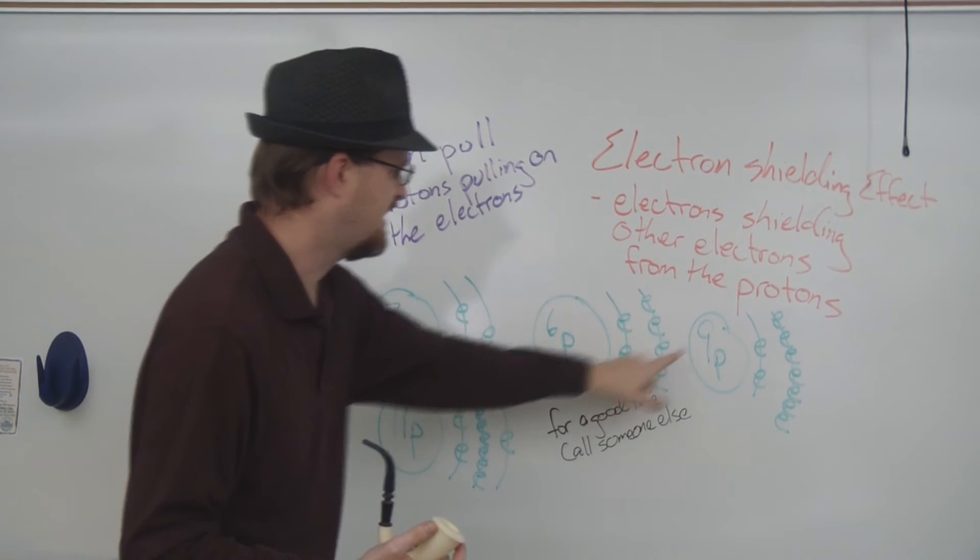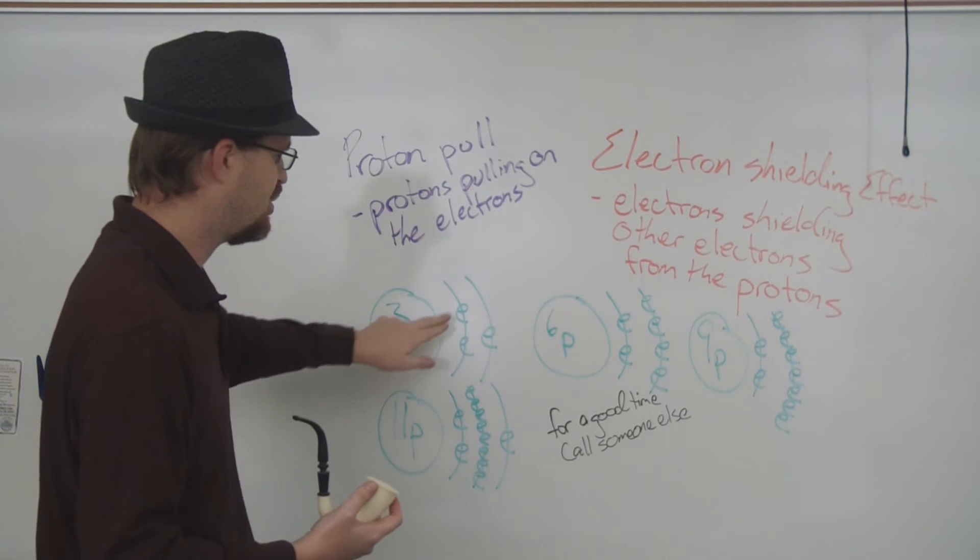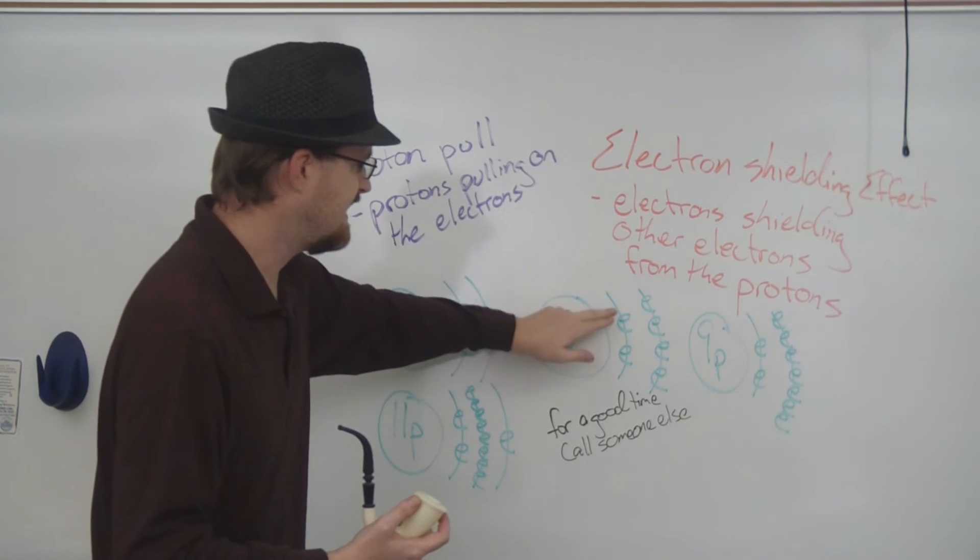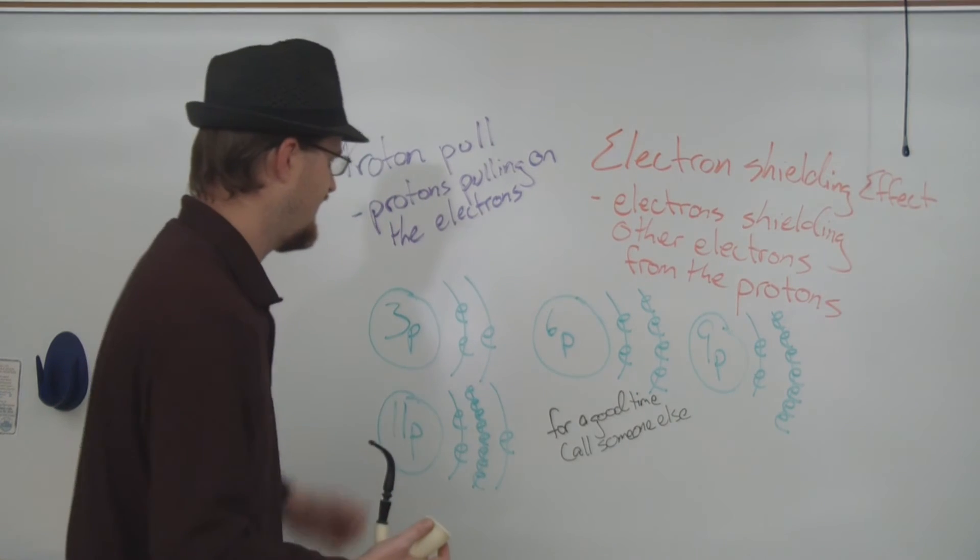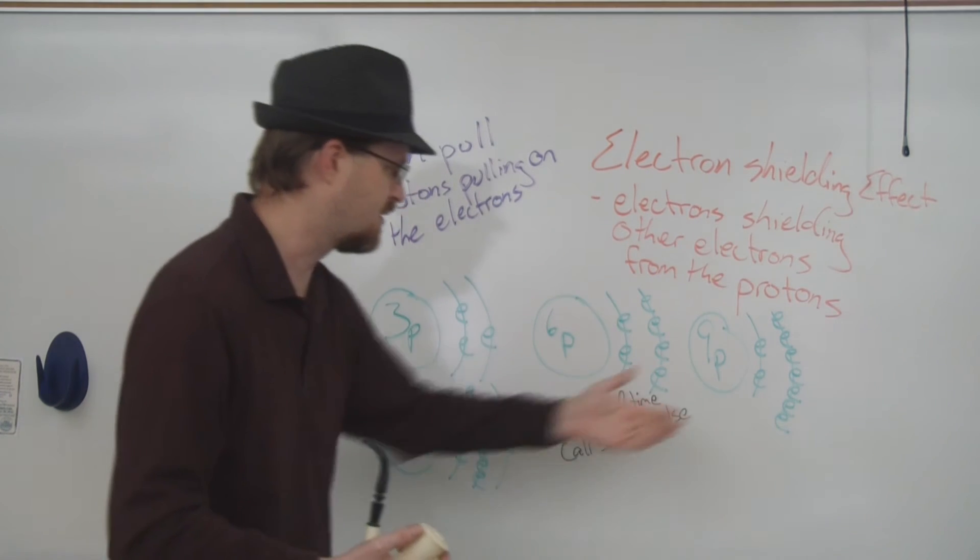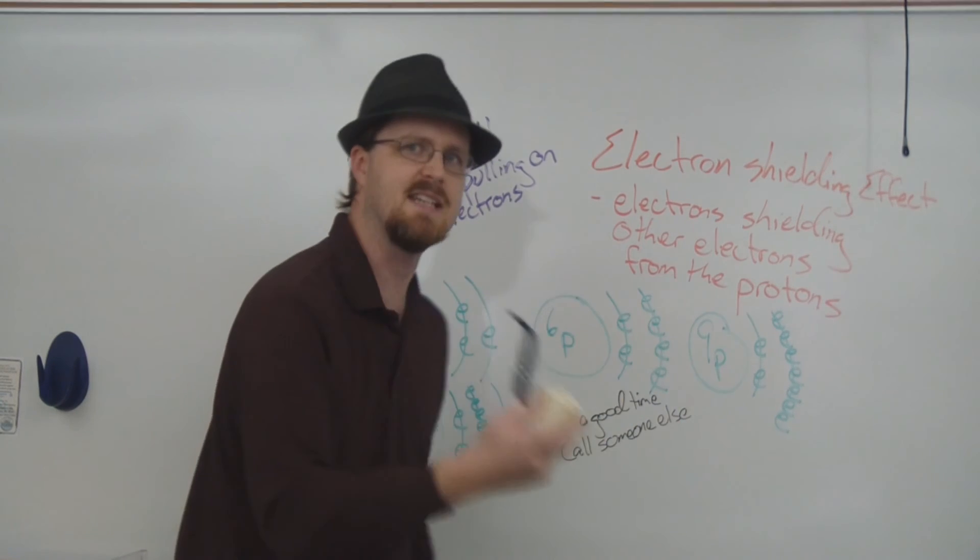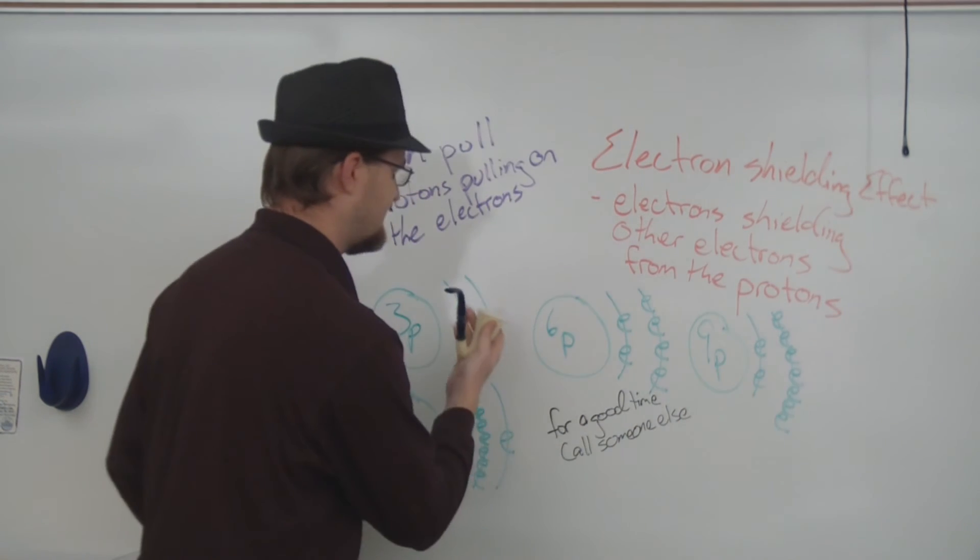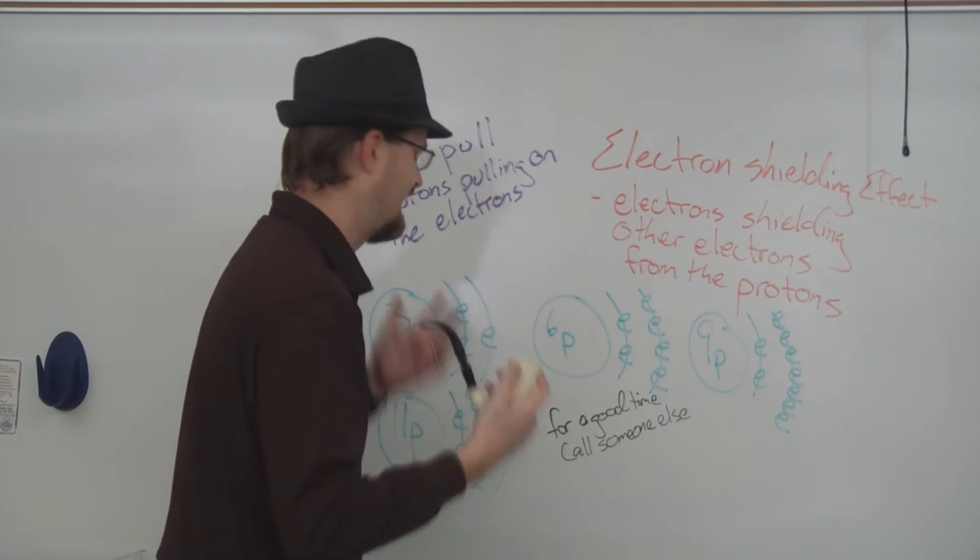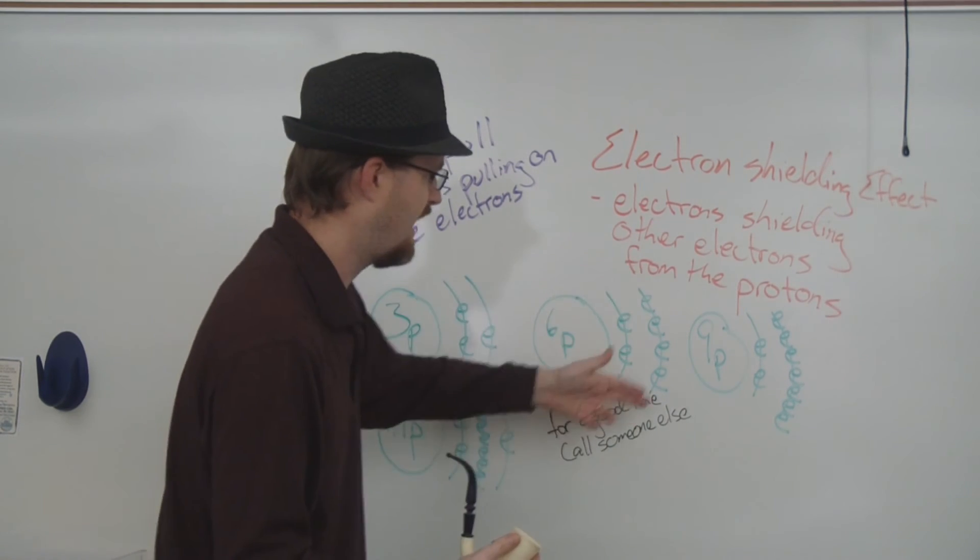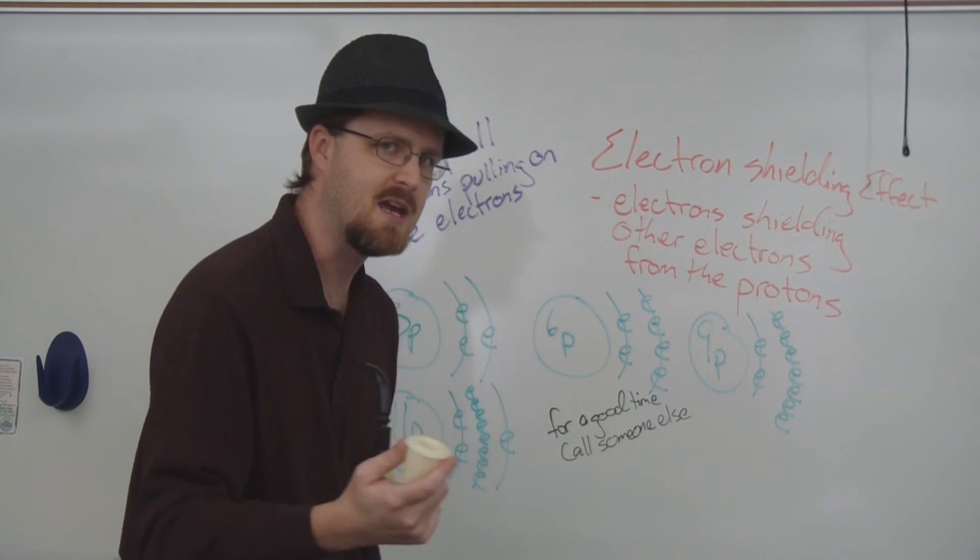And the valence electrons, here in that outermost energy level, are being shielded by these two electrons in front. And as we go left to right across the period, the electron shielding stays the same, because it's the same number of electrons in the front. And clearly, adding more electrons on the side doesn't change a thing.